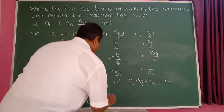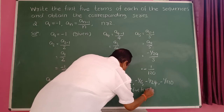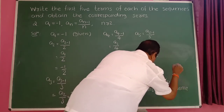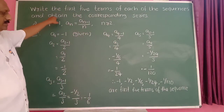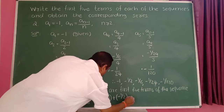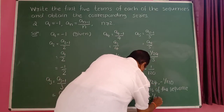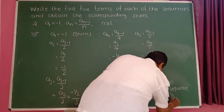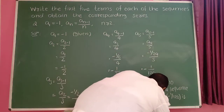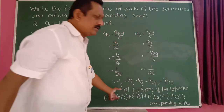The five terms are: minus 1, minus 1 upon 2, minus 1 by 6, minus 1 by 24, and minus 1 by 120. The corresponding series is minus 1 plus minus 1 divided by 2 plus minus 1 divided by 6 plus minus 1 divided by 24 plus minus 1 divided by 120.